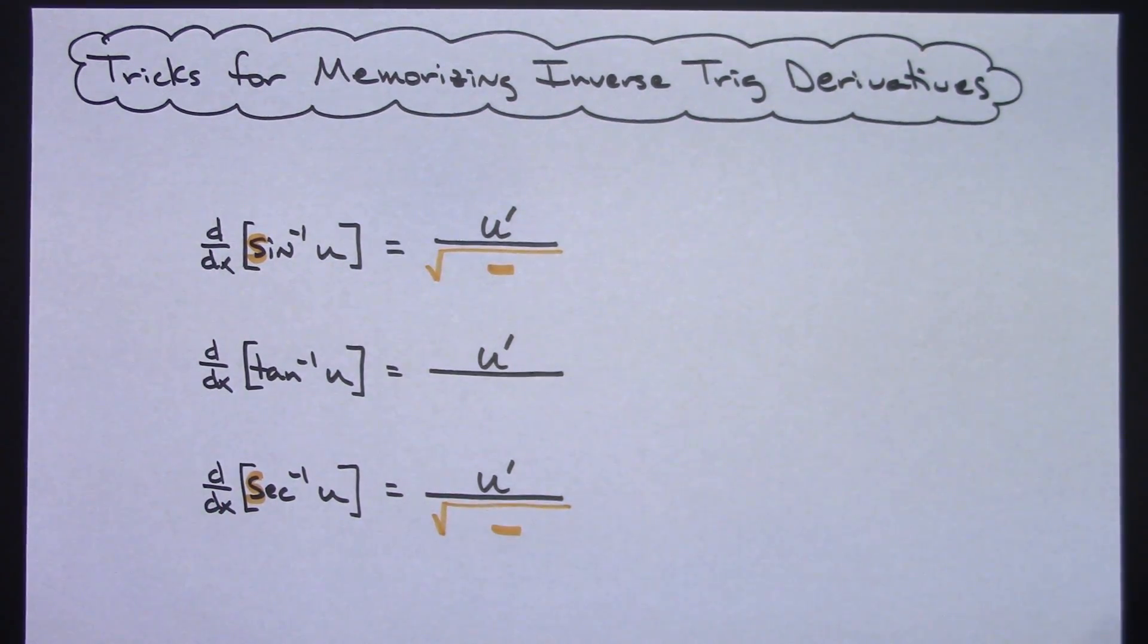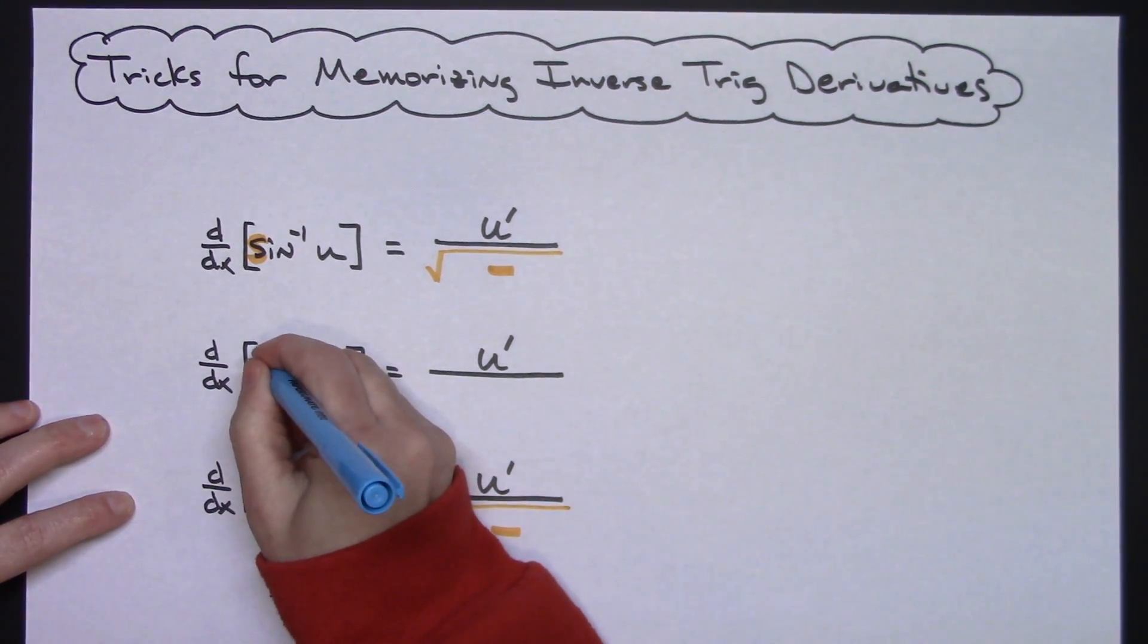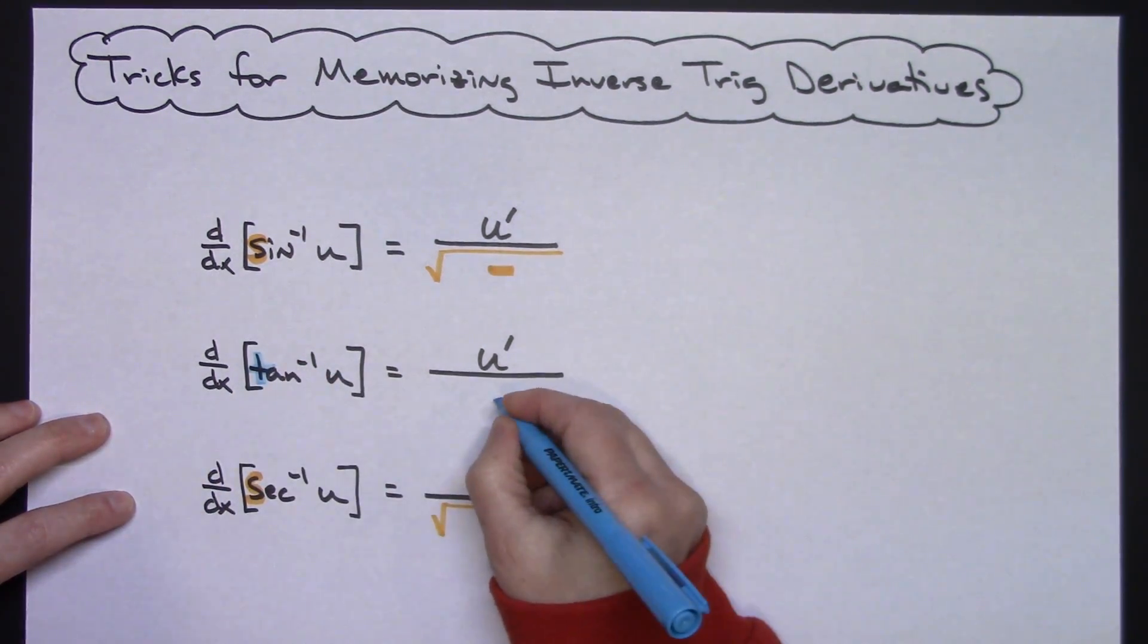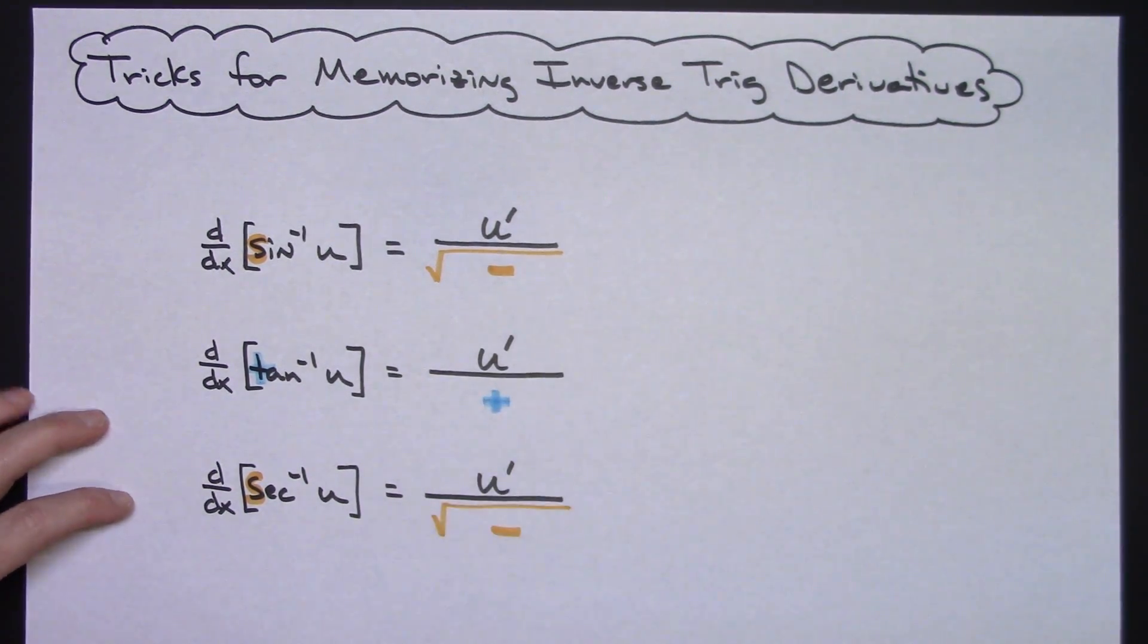Now the next thing I would go to memorizing is the T in the tangent. The T in the tangent forms a cross, so that means I'm going to need addition in the denominator there.